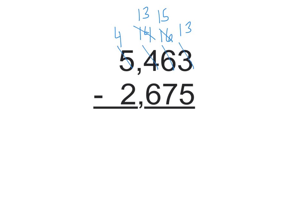And that one 10 that I ungrouped added 10,1s, added to the 3,1s that are already there, gives me 13,1s. Now I did all that work at the beginning because now I can go ahead and solve my equation.